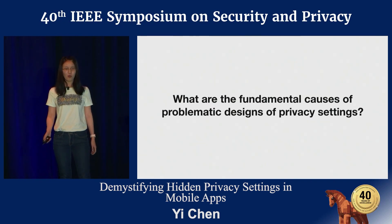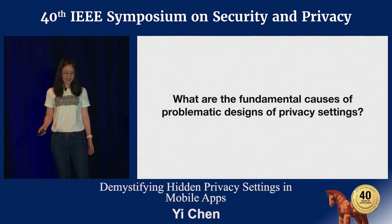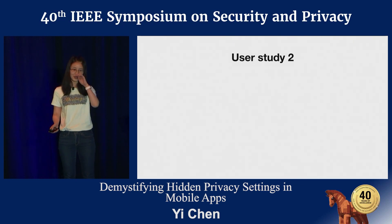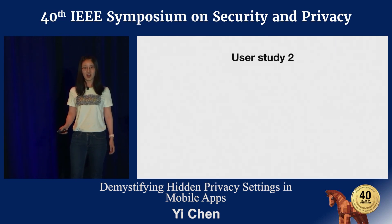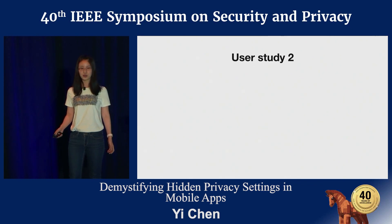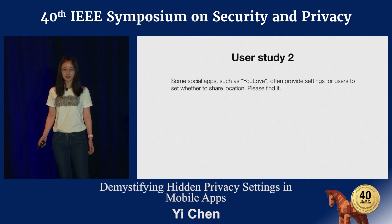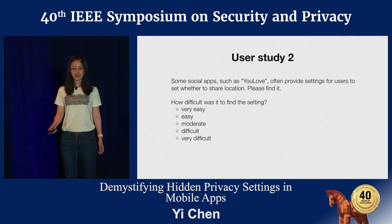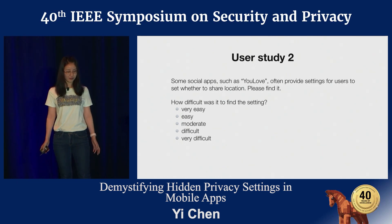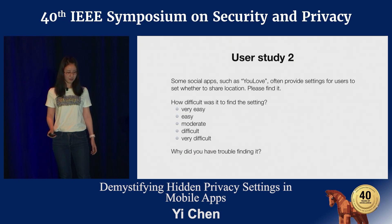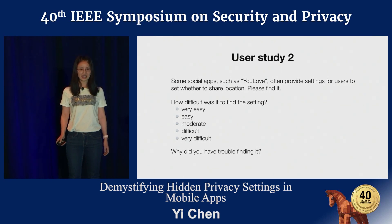So we want to understand what are the fundamental causes of hidden privacy settings. We performed a second user study to collect users' perceptions of privacy setting design. We prepared testing apps, installed them on an emulator and a real device, and asked users to find specific settings. After they found a setting, we asked how difficult it was to find, with five choices from very easy to very difficult. If they chose difficult or very difficult, we further asked why they had trouble finding it. This study included about 600 privacy settings, lasted three months, and had more than 700 participants.